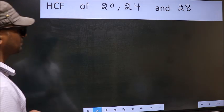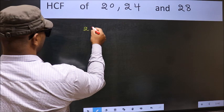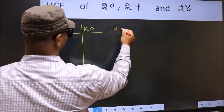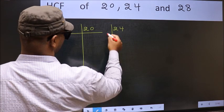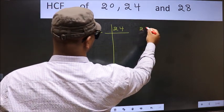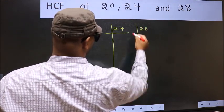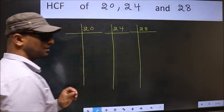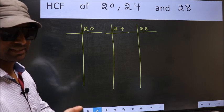What I mean is 20, 24, 28. This is your step 1. Next.